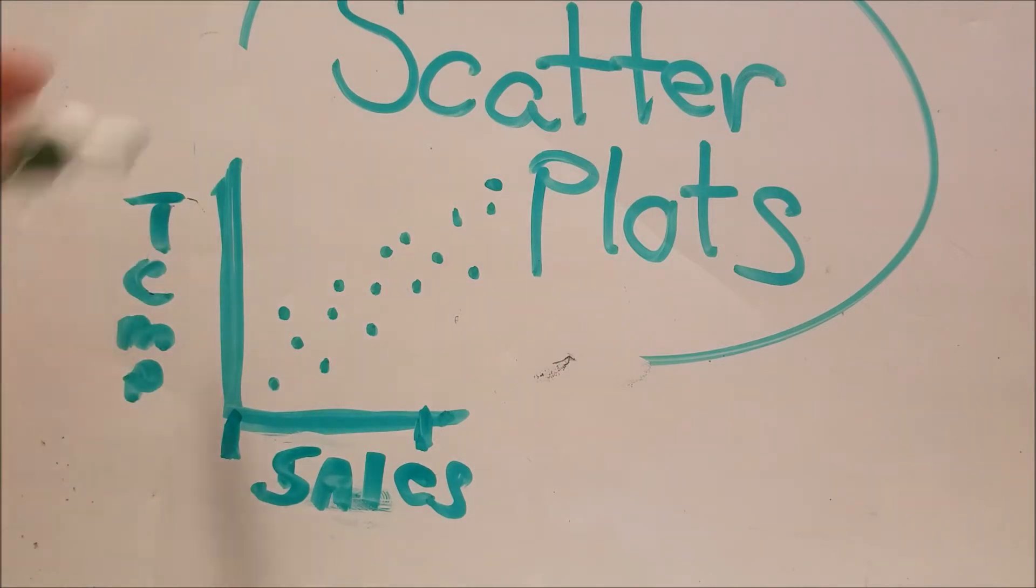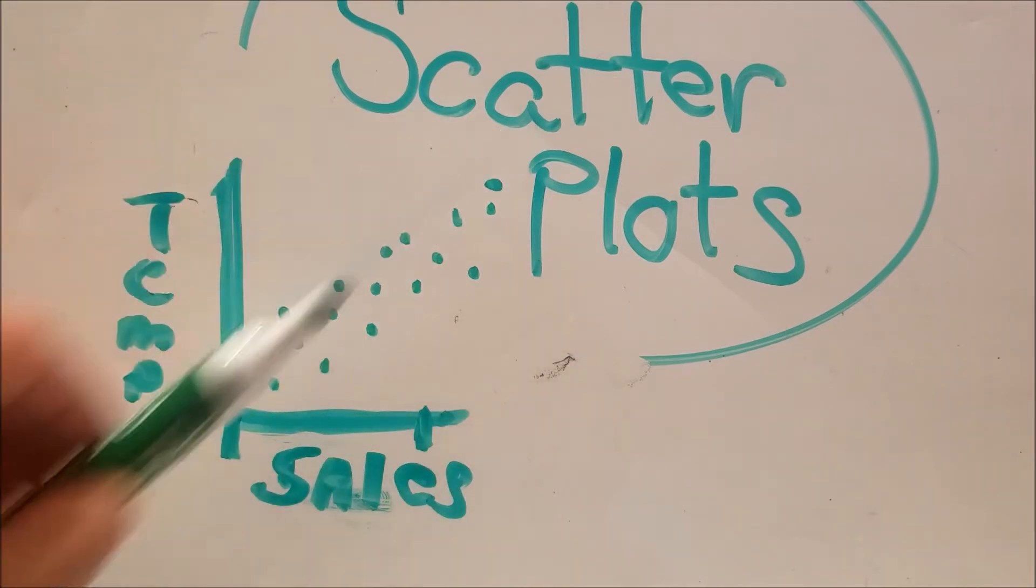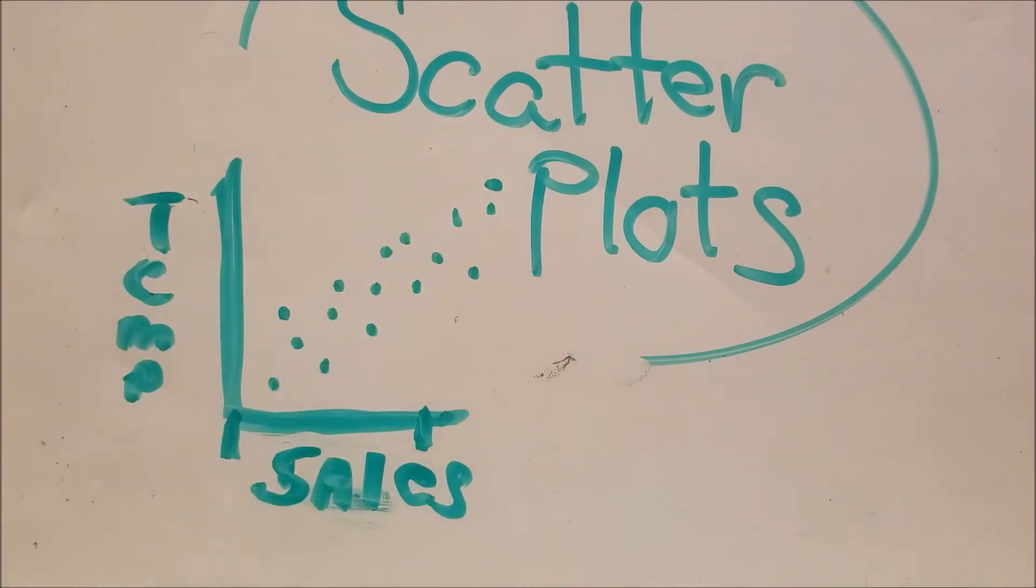So there's a correlation there that we'll talk about, that word, and also called association. There's an association here. By the way, if the sales are going up left to right on the Cartesian grid, this is a positive correlation.